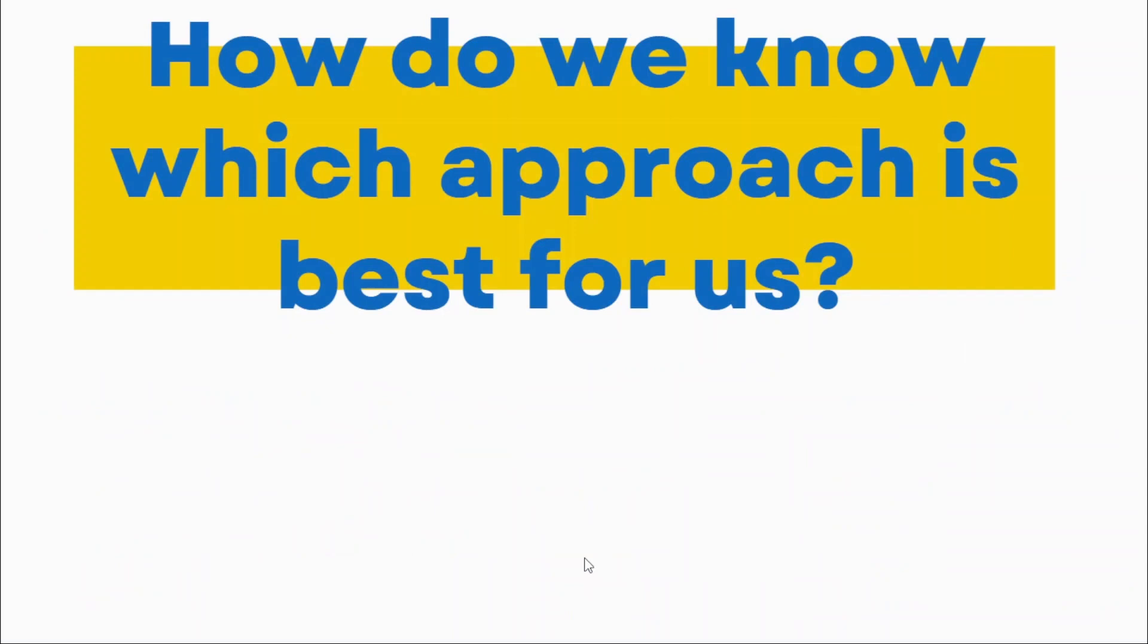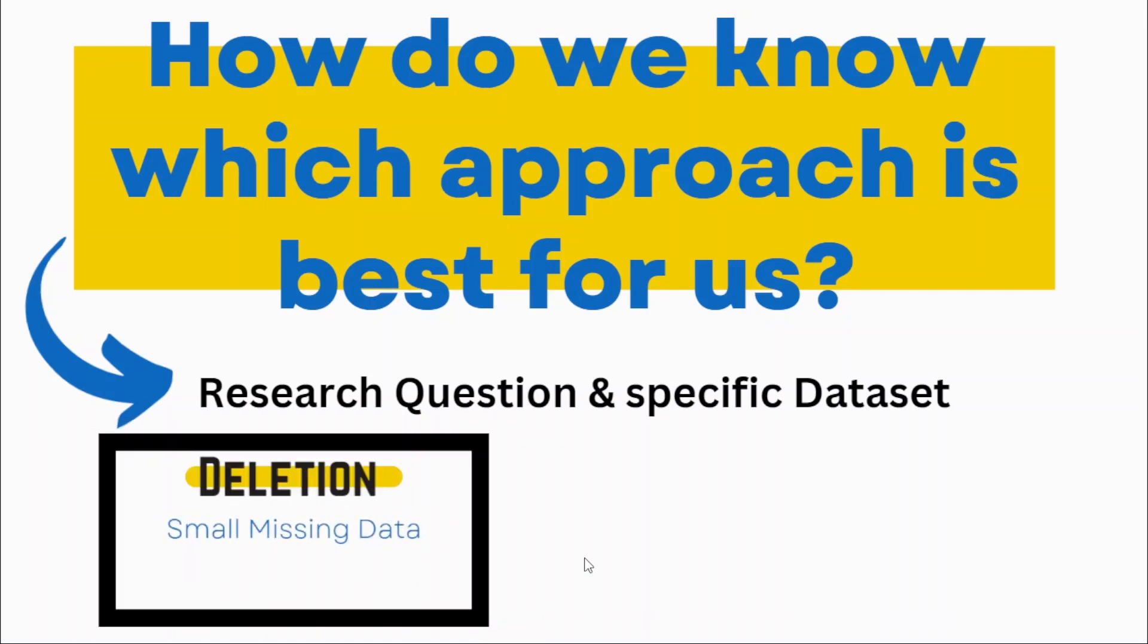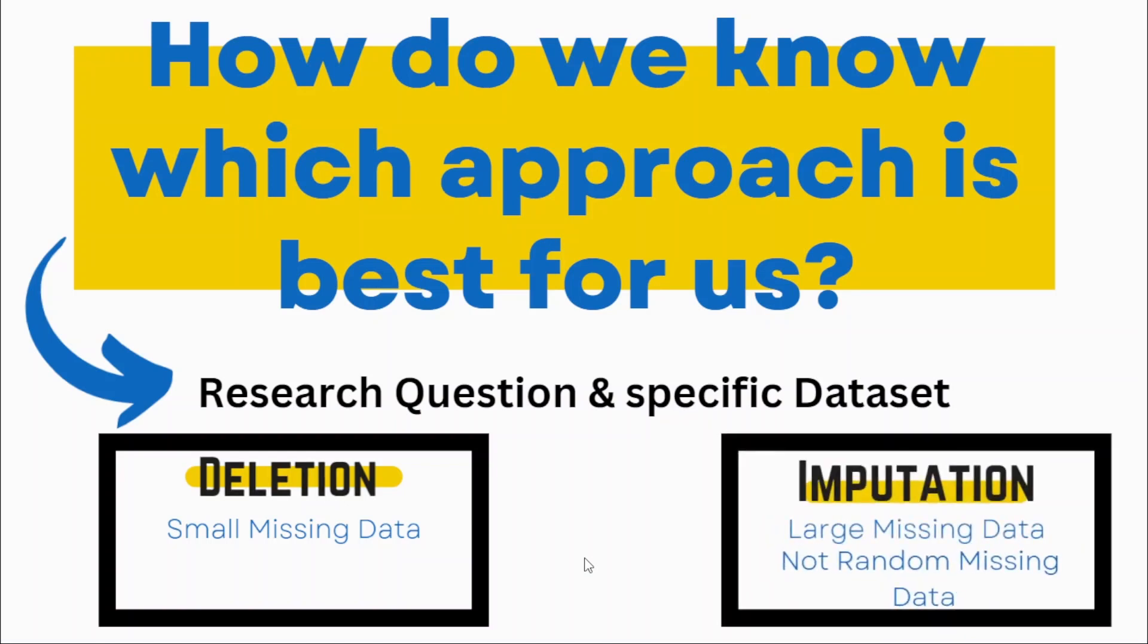An important question is: how do we know which approach is best? It really depends on the research question you are dealing with and the specific dataset you have. Briefly, if a dataset has very small missing samples, you can go with deletion. But if the missing data is large and you want to preserve the dataset, and the missing data is not at random, you should go with imputation.